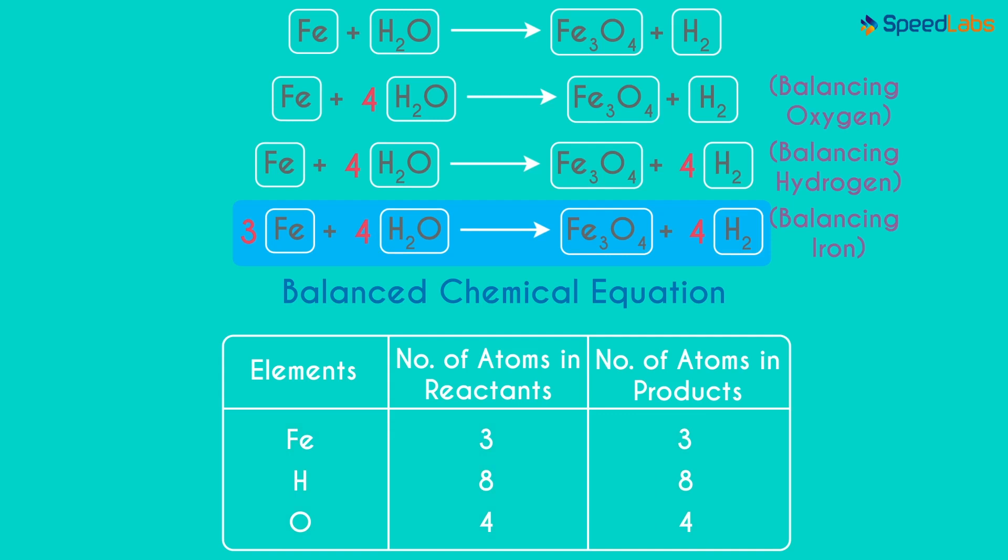You'd have noticed that there are no fixed steps to balance a chemical equation. We just try balancing each atom at a time which is why it's called a hit and trial method. We make trials to balance the equation.